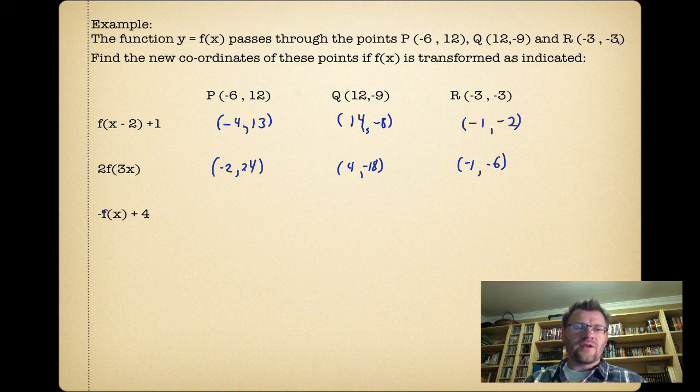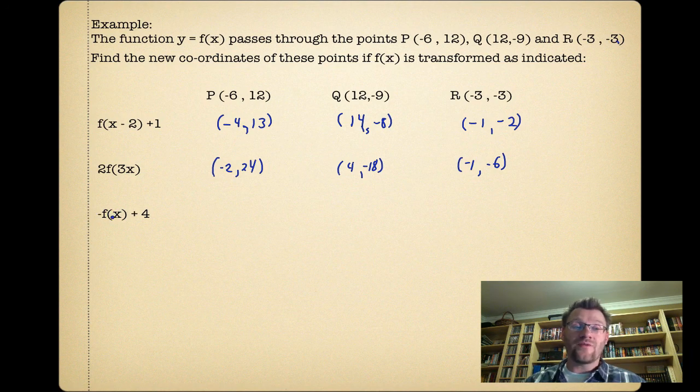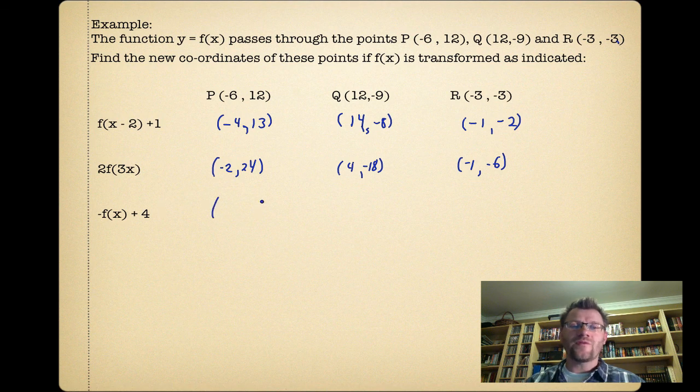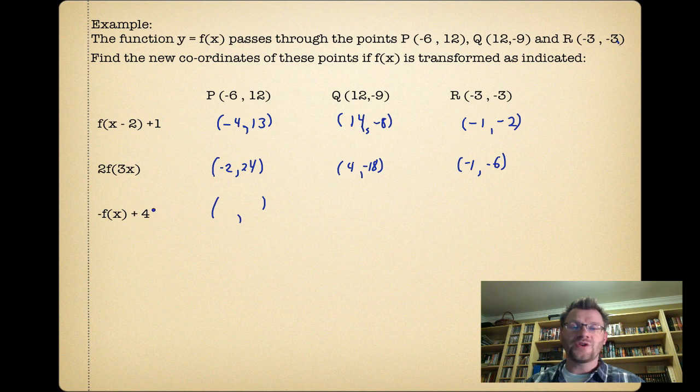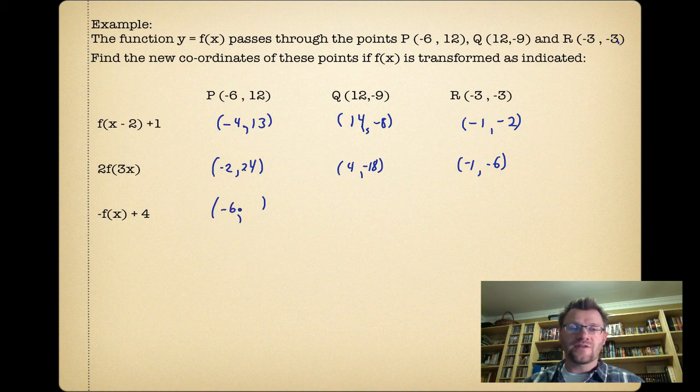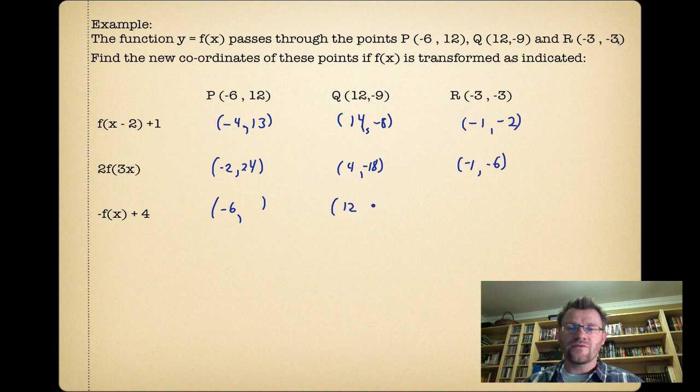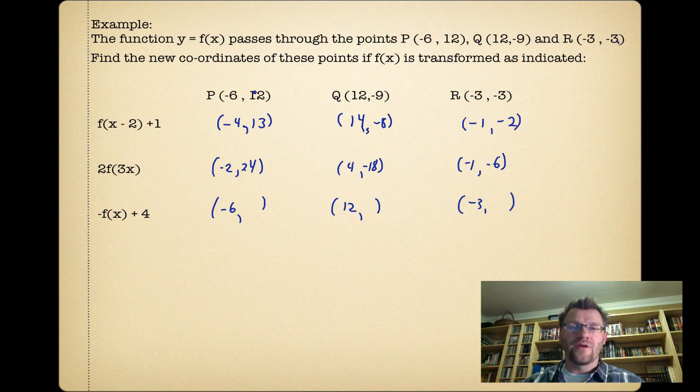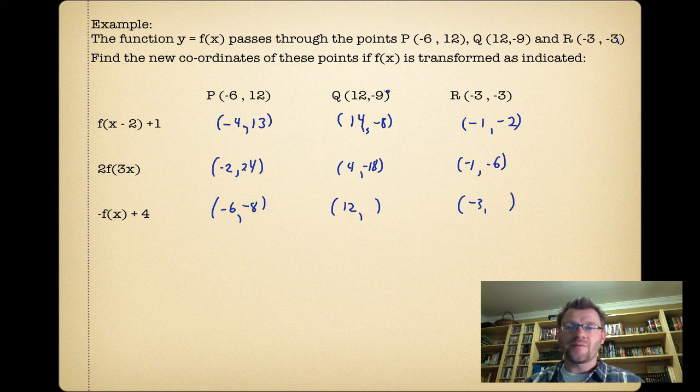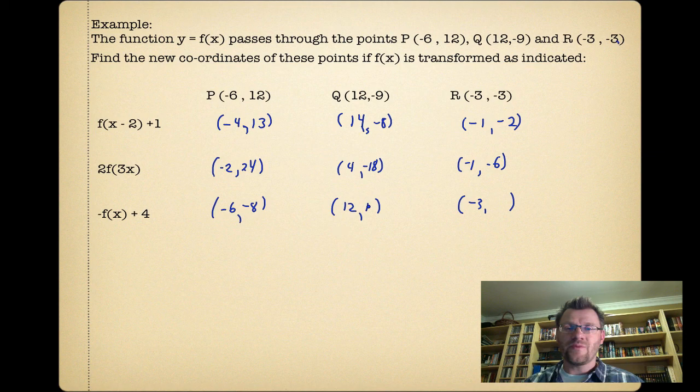This one says it's negative f(x). f(x) is the same as our y-value, so if we're saying negative f(x), we're changing the y-value to a negative, then adding 4 to it. We always do stretches and reflections first, then shifts or translations. Our x-values don't change because there's no numbers that would indicate a change. The y-values get changed to a negative and then added 4: that becomes −8, this becomes 13, and this is 7.